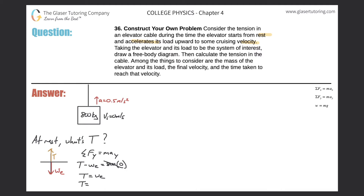The weight of the elevator is found by multiplying the mass by gravity: 800 times 9.8 gives us 7,840 N, or 7.84 times 10³ newtons. So at rest, the tension in the cable equals the weight of the elevator.